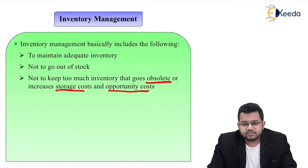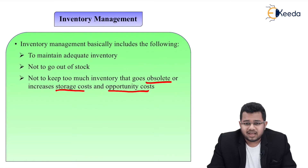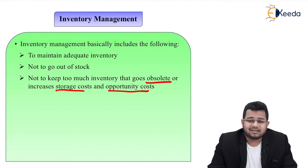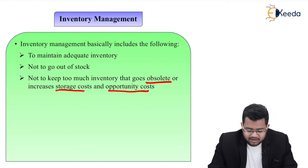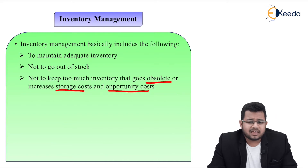If you have too much inventory, you need to store it, which can increase storage costs. Opportunity cost can also increase — the money tied up in inventory could have been invested elsewhere for a better return. Additionally, inventory can become damaged or, if it is perishable, it can go obsolete in various ways.